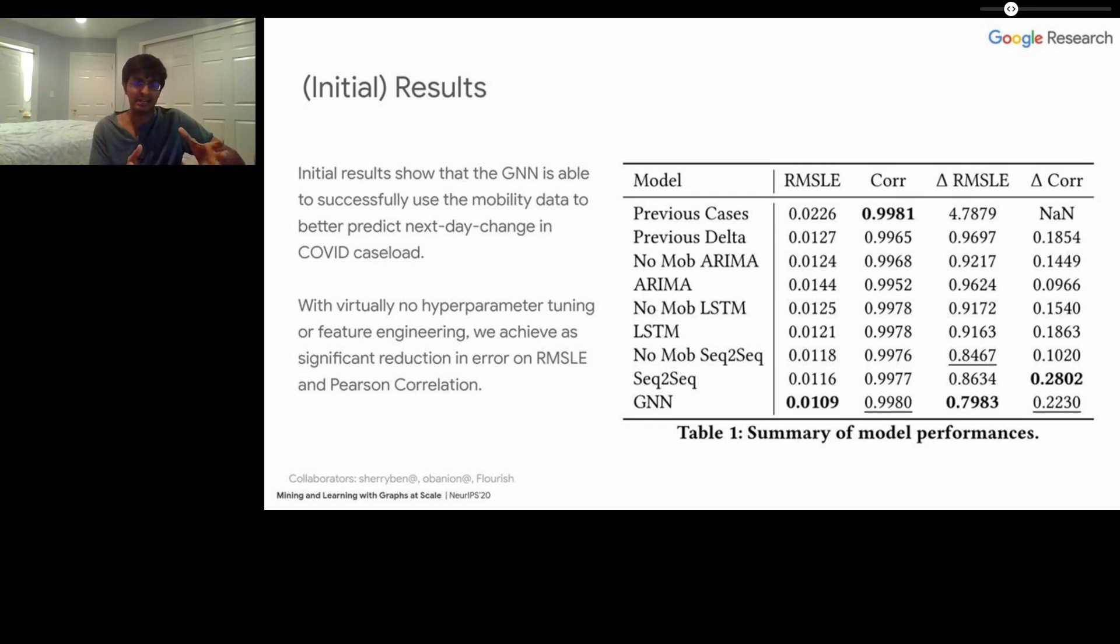What's really exciting is we basically did no hyperparameter tuning or feature engineering when we ran this model. We just took the underlying data, constructed the graph, and ran the model on top. Yet we were still able to achieve a significant reduction in error on the RMSLE and a significant improvement in the Pearson correlation. This is really exciting because it lends credence to this idea that if you have a deep ML model that can function on graphs and you have data that can be very easily modeled as graphs, then the GNN is going to be able to outperform other baselines that don't have access to this information.